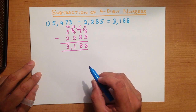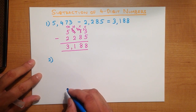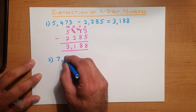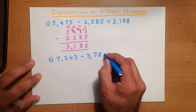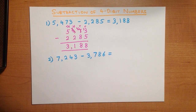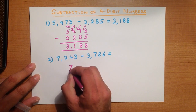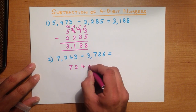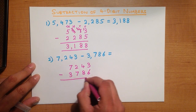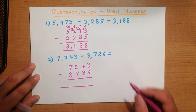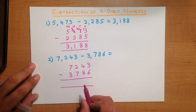Do you notice how easy it is? Even 4-digit numbers using the vertical format. So let's look at a slightly more difficult question. What is 7,243 minus 3,786? The first thing we do is write these numbers down in the vertical format, and we subtract the bottom number from the top number starting with the column on the right-hand side.